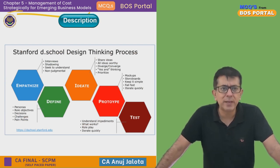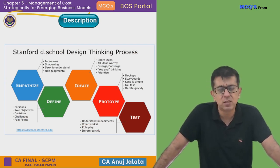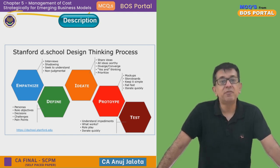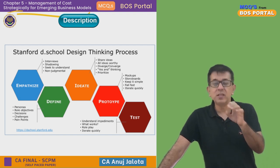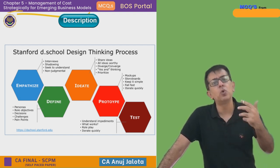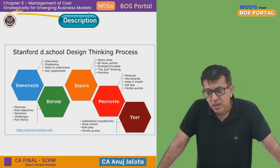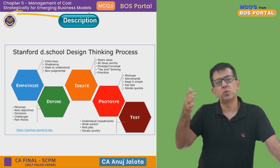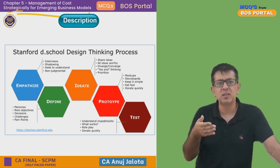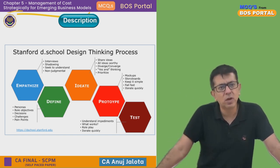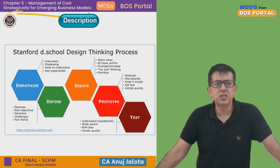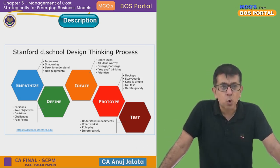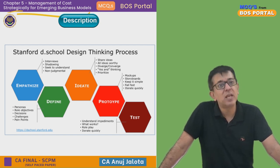Design thinking is about redefining problems, redefining assumptions, and then launching products in a better way — giving new solutions to problems. The Stanford school outlines steps: empathize, define, ideate, prototype, then test the product. If it works, great; otherwise go back and repeat. The core of all these things is innovation.